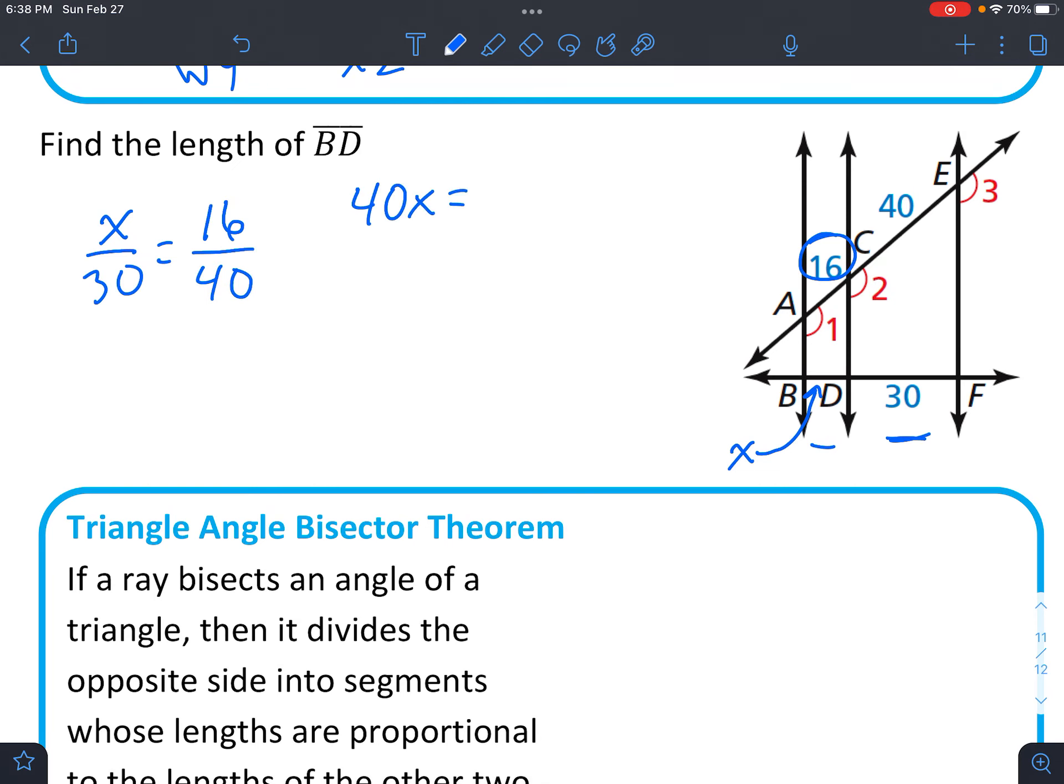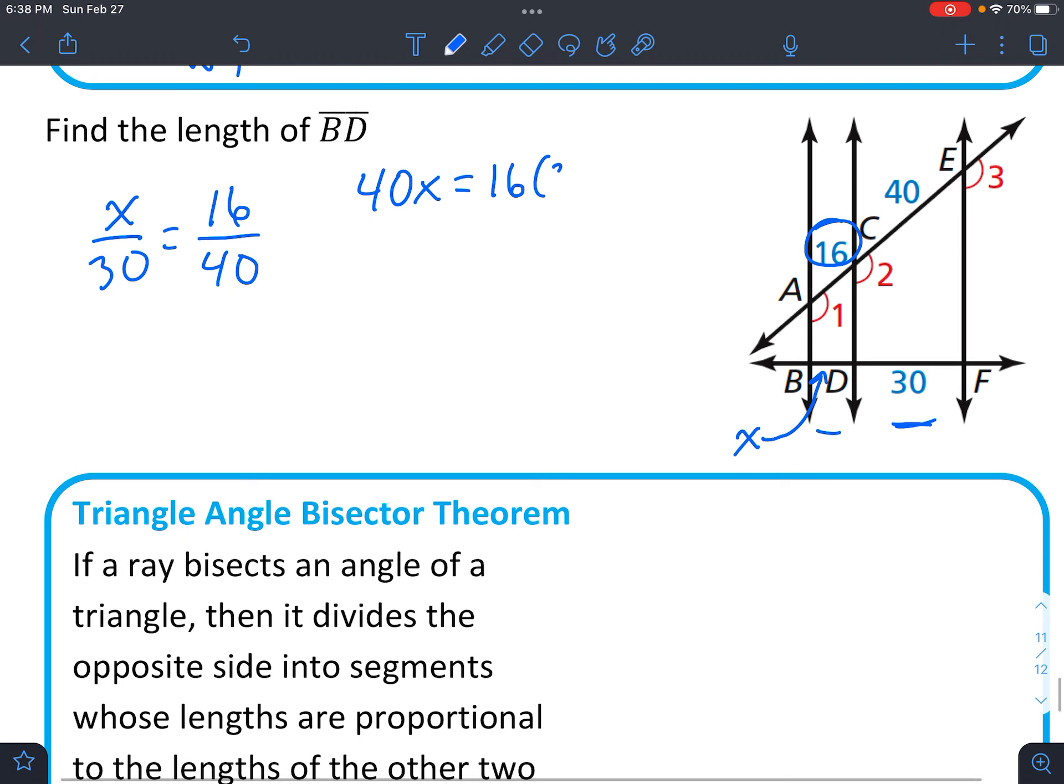And once again, we're going to cross multiply to get 40X equals 16 times 30, which multiplies to 480. Divide both sides by 40. And we get X equals 12.